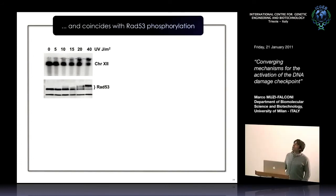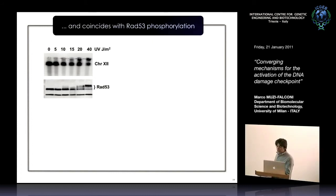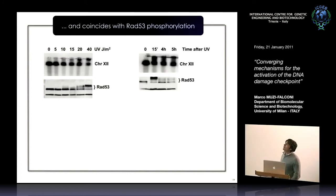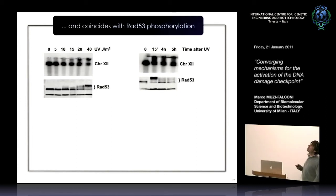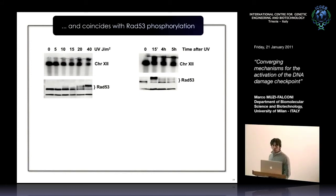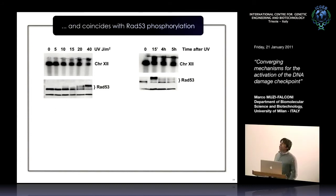If we let these cells repair their damaged chromosomes, there is a decrease with time in the amount of the cloud signal, and also a decrease in checkpoint activation — the checkpoint switches off slowly, but it does switch off. We wanted to see what kind of single-stranded DNA we have here — long regions, short regions, gaps — so we got in touch with Massimo Lopez in Zurich and did some EM on this material.